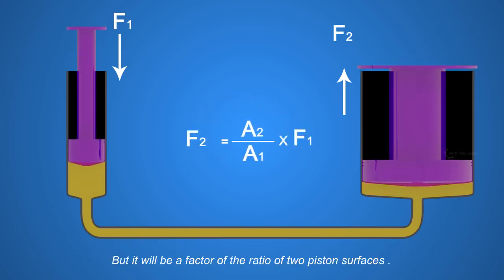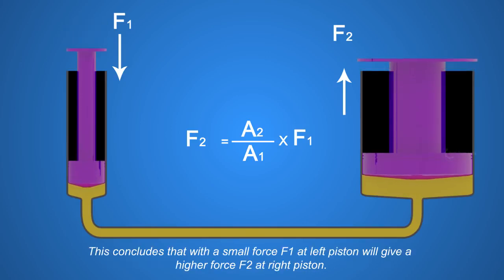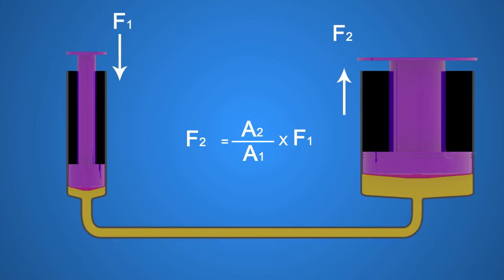But it will be a factor of the ratio of two piston surfaces. This concludes that with a small force F1 at left piston will give a higher force F2 at right piston, provided if A2 is greater than A1.